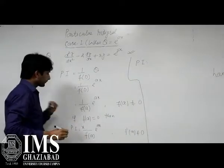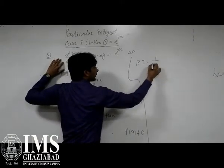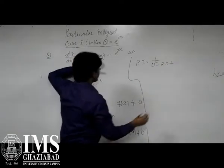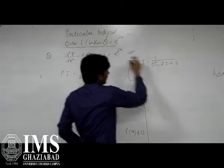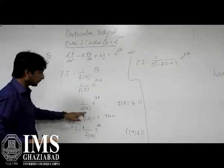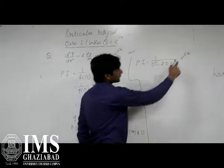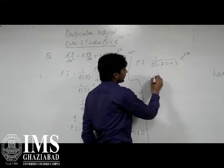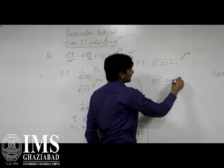Now, this is the particular integral. This is the formula 1 upon F(D). So this is the D. So in this case, this is 1 upon d² minus 2d plus 3, and Q is here e to the power 2x. So according to their method, D ko a replace. So if we can check on putting D is equal to a value, 0 to a. Now, D ko a replace.